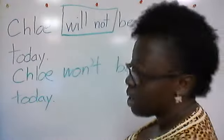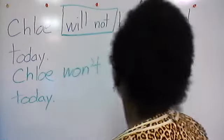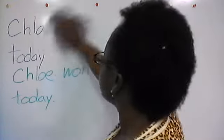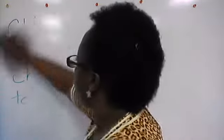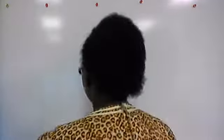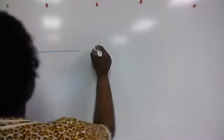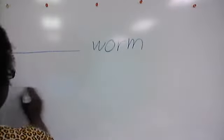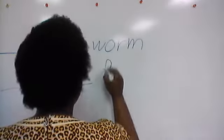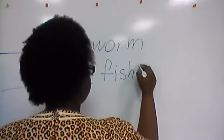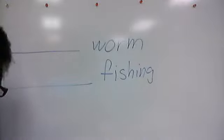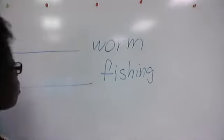The second section says: write an adjective for each noun, and write an adverb for each verb. You'll need to determine whether the word written there is a person, place, or thing, or whether it is a word that shows action. Let's go ahead and do the first two together on the board. The first word is 'worm' and the second one is 'fishing.'